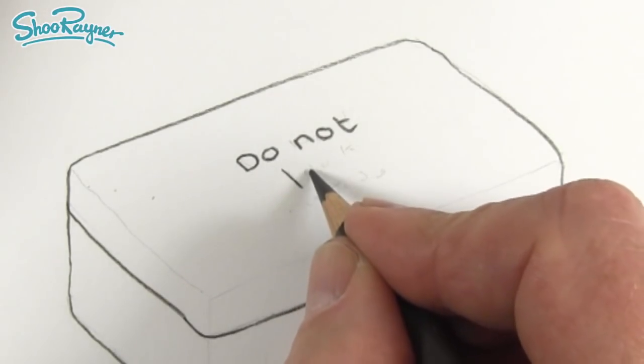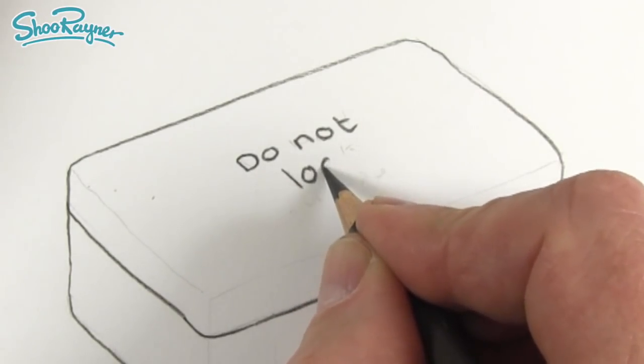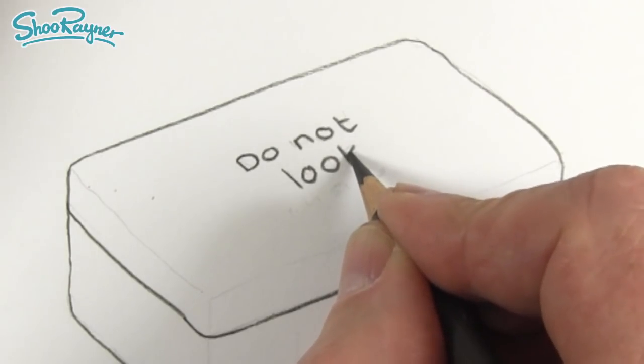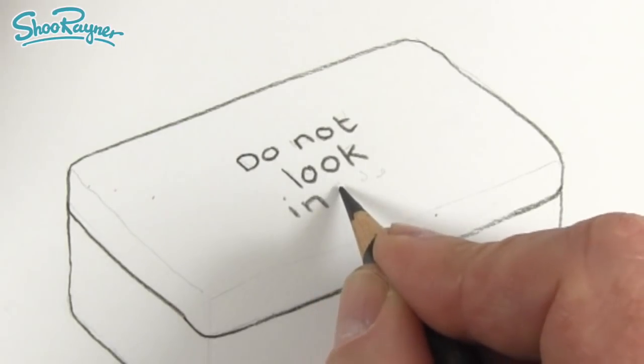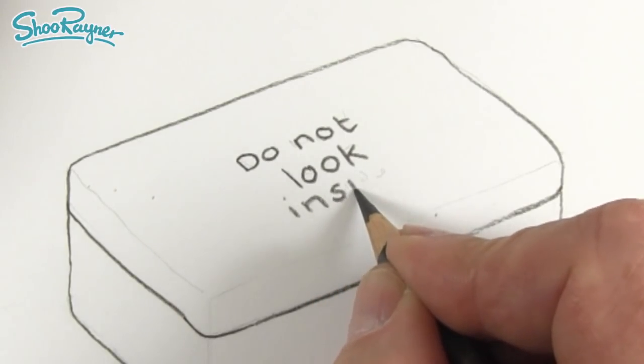And similar with the L, do not look. And then the down of the K has to be the same. In side.